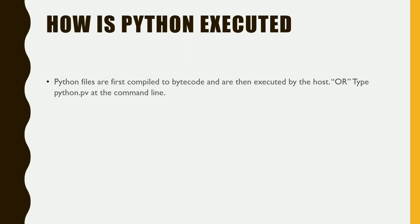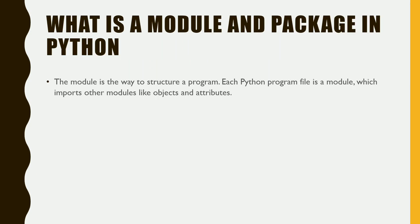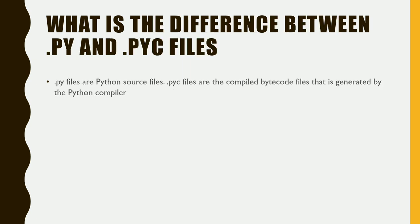How is Python executed? Python files are first compiled to bytecode and are then executed by the Python interpreter. What is a module and package in Python? A module is a way to structure a program; each Python program file is a module which imports other modules like objects and attributes. What is the difference between .PY and .PYC files? .PY files are Python source files, whereas .PYC files are compiled bytecode files generated by the Python compiler.